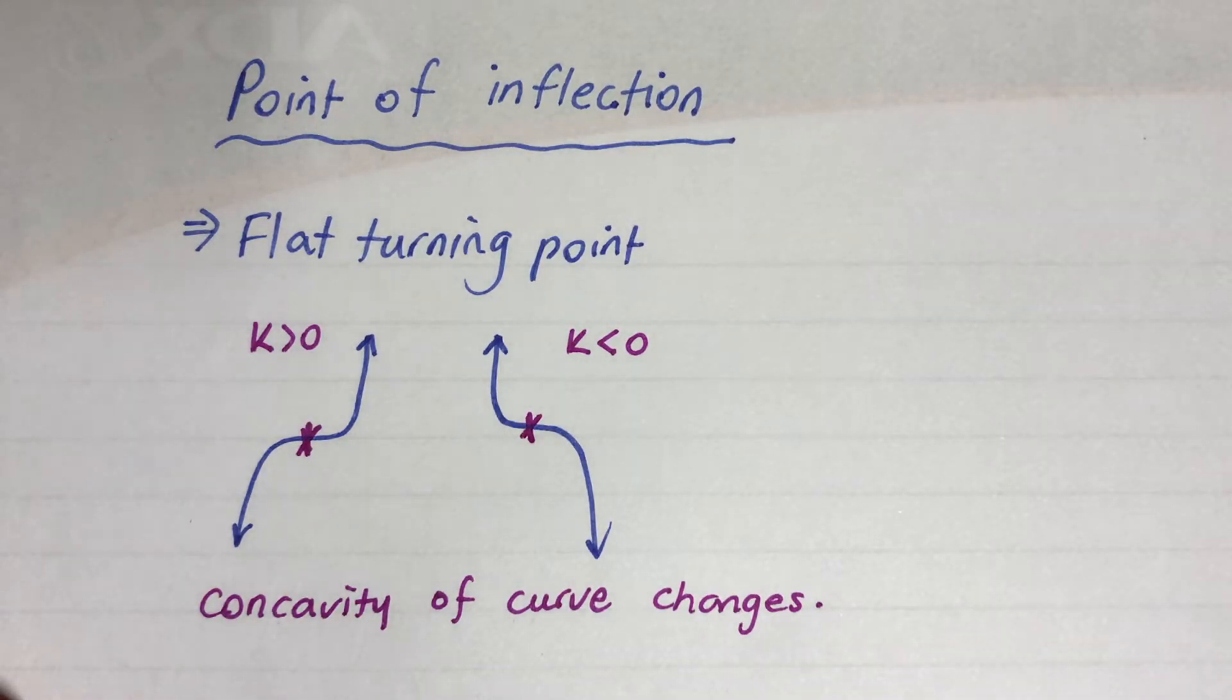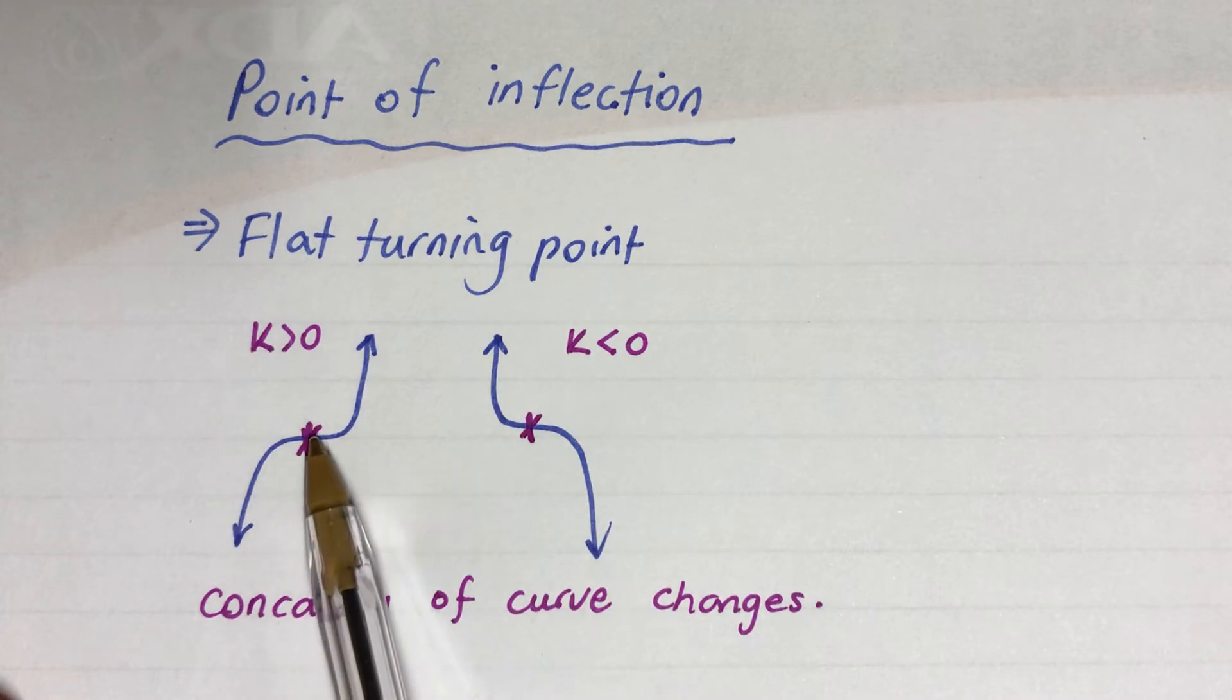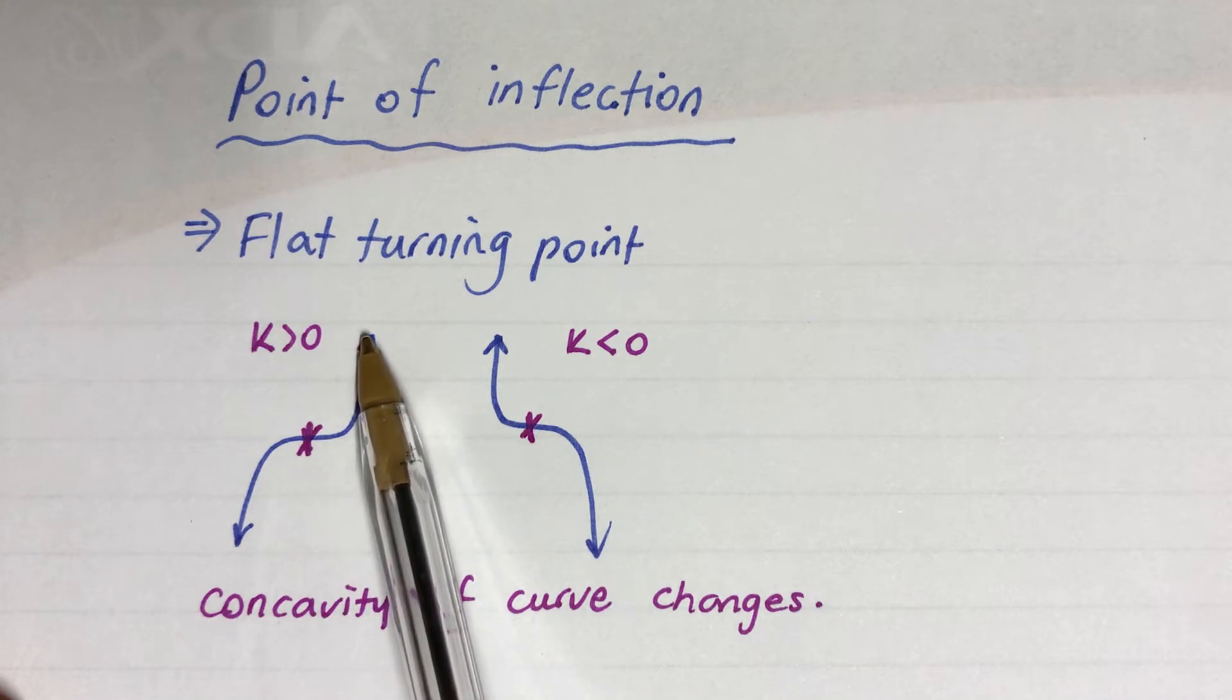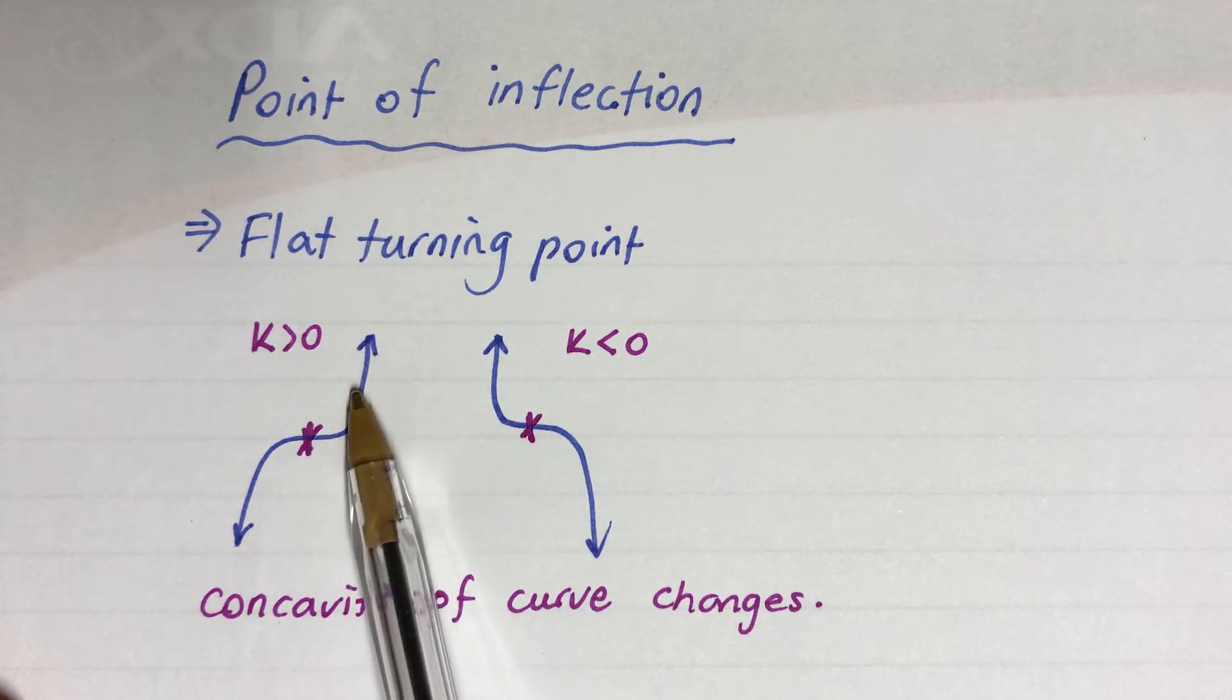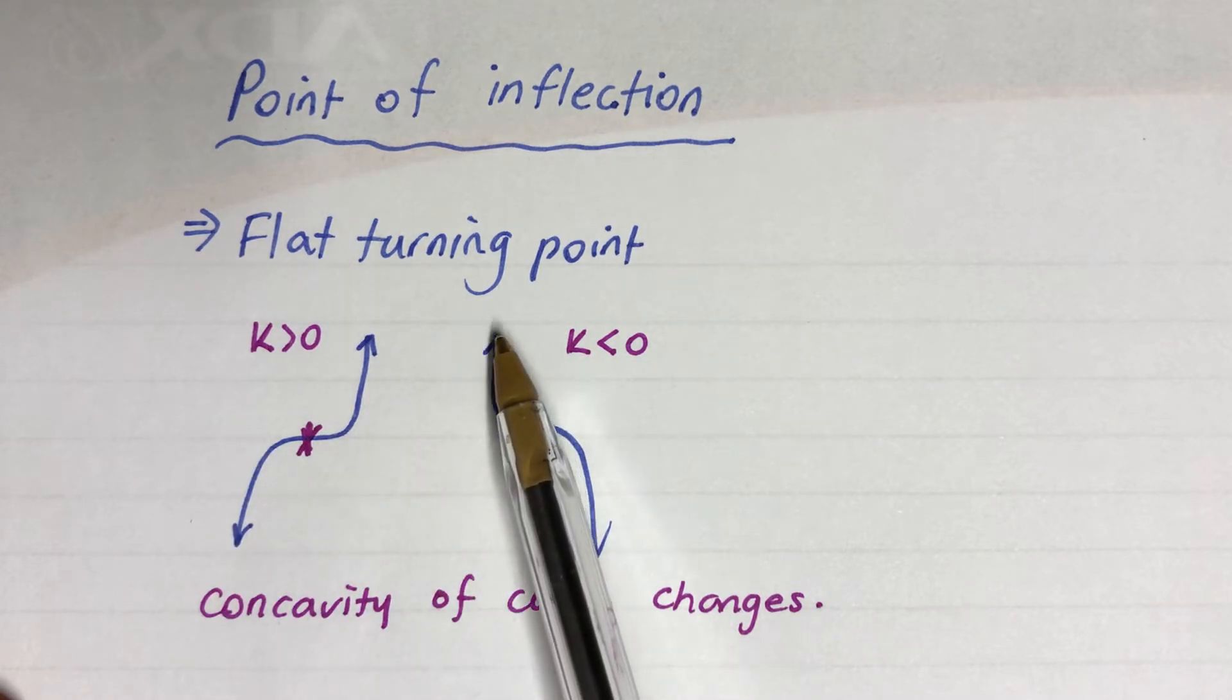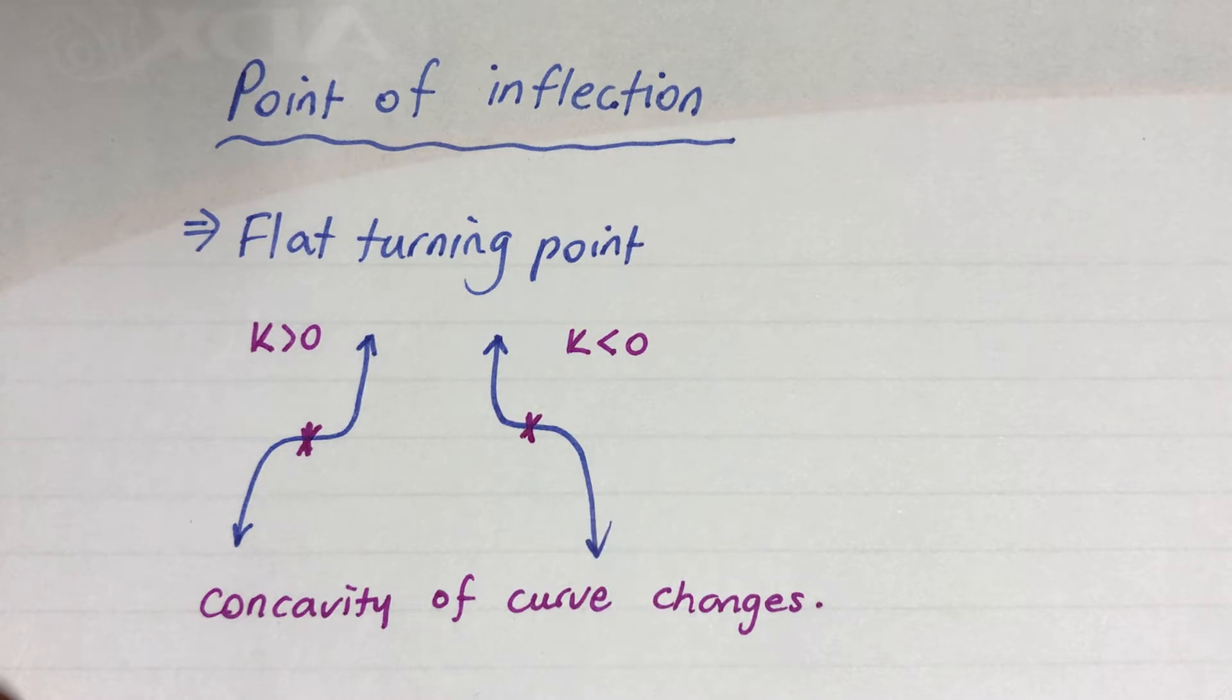Next one is a point of inflection. A point of inflection is a flat turning point of a cubic function. When k is bigger than zero, it goes from right to the left. When k is negative, it starts from the left to the right.